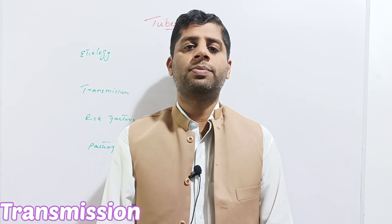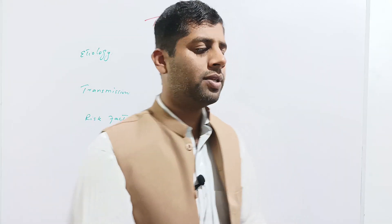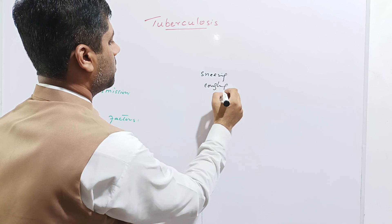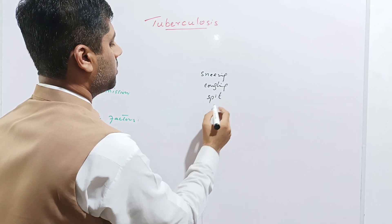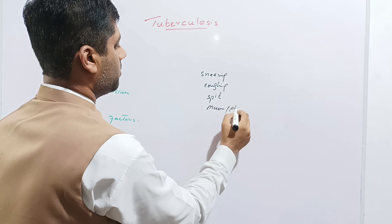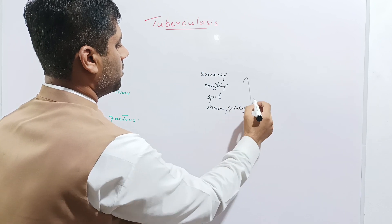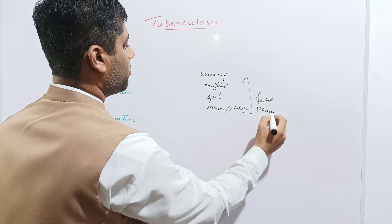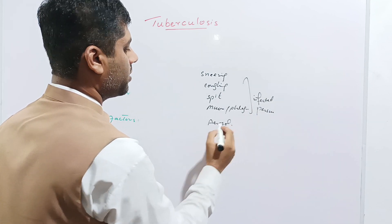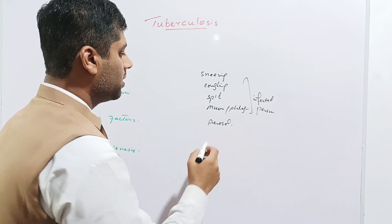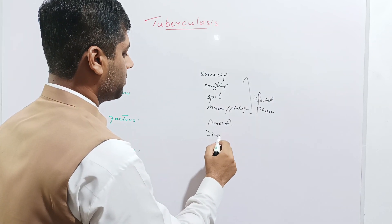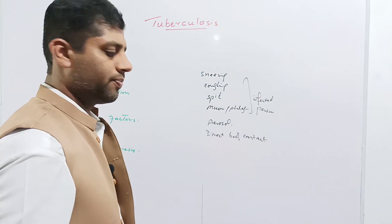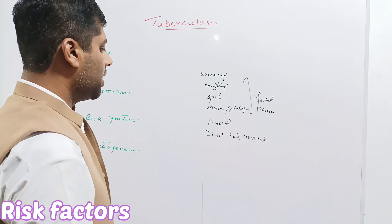This disease can primarily be transmitted from one person to another through the respiratory tract — for example, sneezing or coughing of the infected person, or spitting mucus or phlegm. The disease also bears aerosol transmission and can spread through direct body contact. These are the primary routes of transmission of tuberculosis.